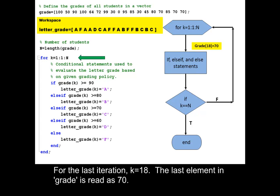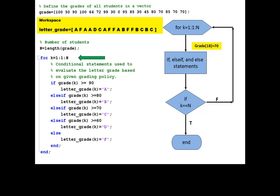For the last iteration, k equals 18. The last element in grade is read as 70. Check conditional statements sequentially as before.